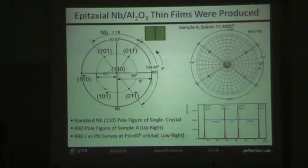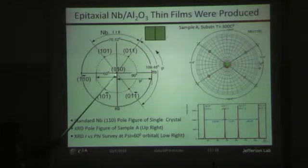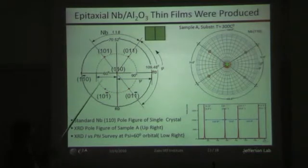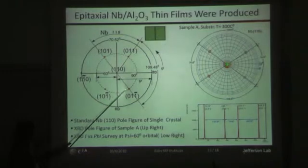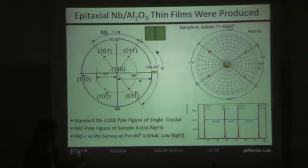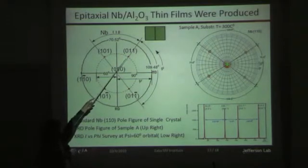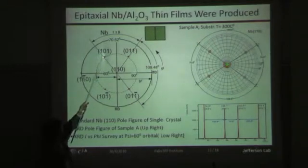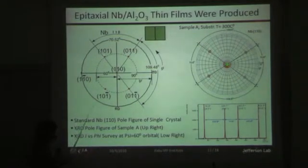This is looking at the epitaxial relationship and confirming that this is a single crystal. By theory, if we were to take a pole figure of 110 single crystal Niobium, we would expect four nearest-neighbor peaks at 60 degrees in psi. The angles between these should meet the constraints expected from reciprocal space of the lattice — these two nearest neighbors should be about 109.5 degrees apart, and these two nearest neighbors should be about 70.52 degrees apart.